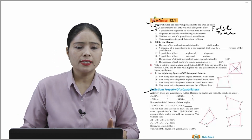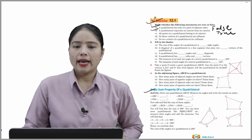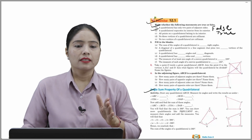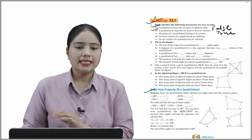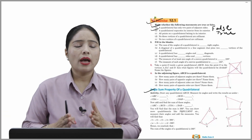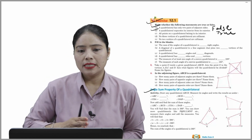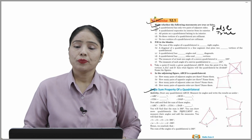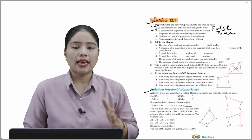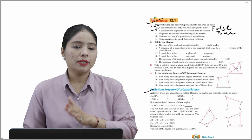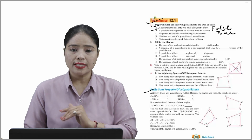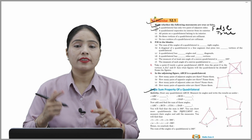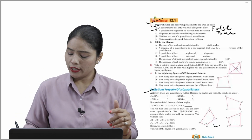Now the angle sum property of a quadrilateral. Activity: draw any quadrilateral ABCD, measure its angles — angle ABC, angle BCD, angle CDA, and angle DAB — then find their sum. You will find that the sum is 360°. You can draw more quadrilaterals like PQRS, LMNP, etc., measure and add their angles. In each case, the sum of the four angles equals 360°. Hence we conclude that the sum of the angles of a quadrilateral is 360°.